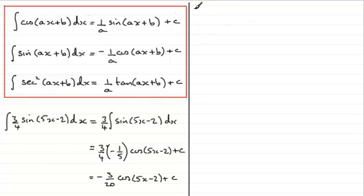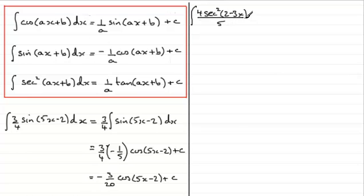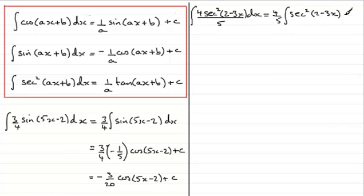Let's try this one — it looks a little different but fundamentally follows the same theme. It's 4 sec²(2 − 3x) all divided by 5, integrated with respect to x. We can think of this as four-fifths times the integral of sec²(2 − 3x) with respect to x.